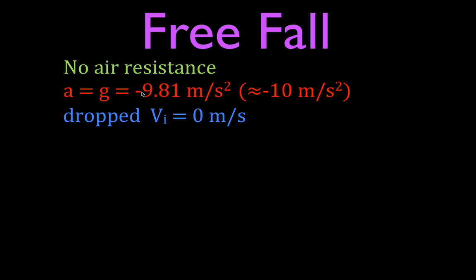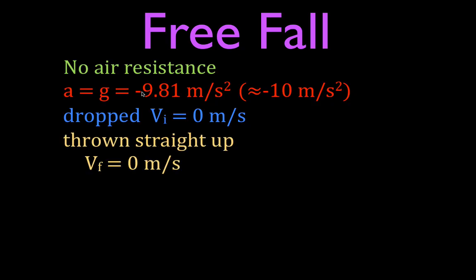There are two kinds of problems. One is when something drops straight down — when you drop something, the initial velocity is zero meters per second. It won't often say that explicitly in the problem; you just have to remember it. When you throw something straight up, the final velocity when it gets to the top of its path, before it starts returning back down, is zero meters per second. If you remember that, it will help you simplify some of your equations.